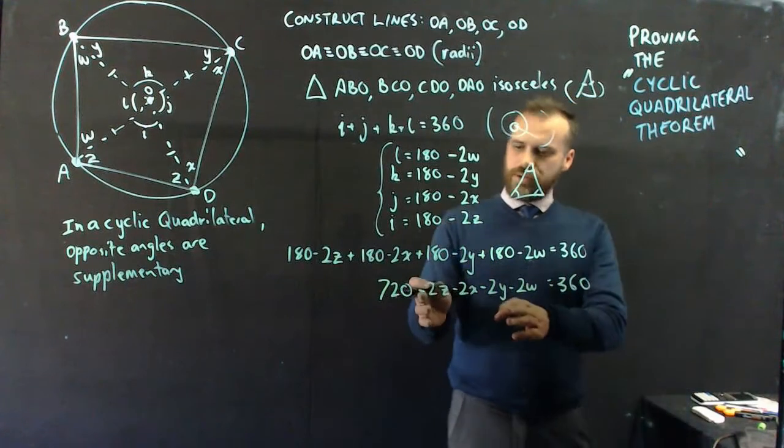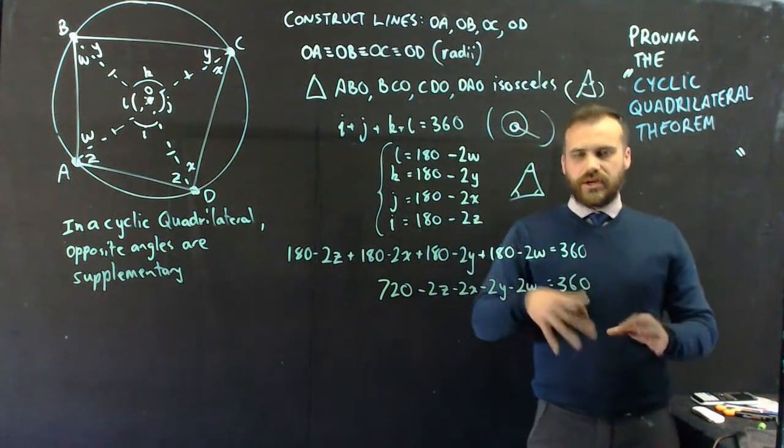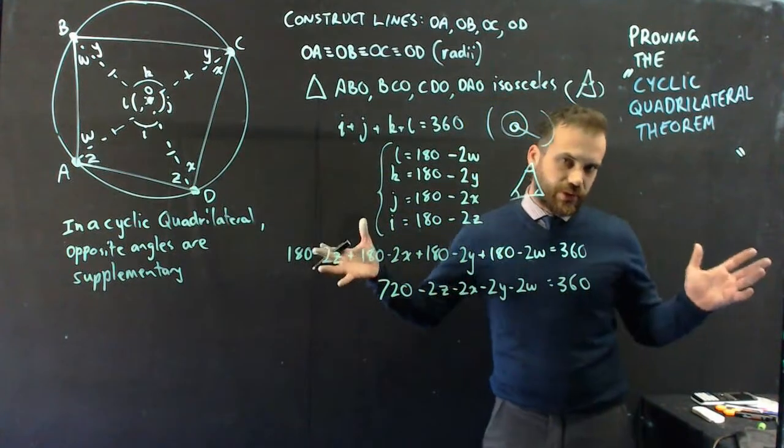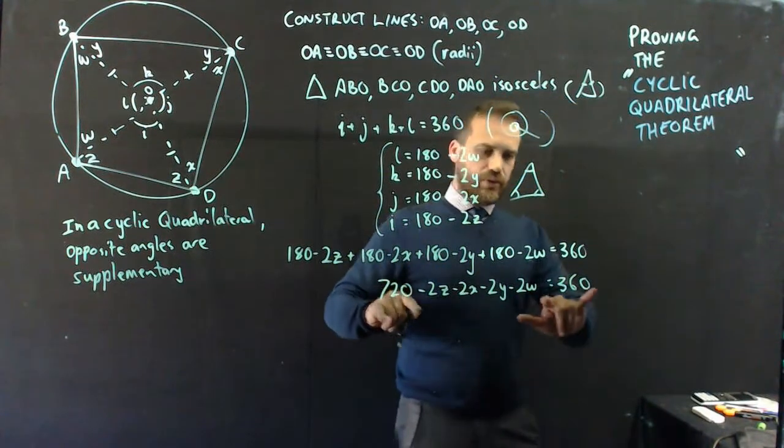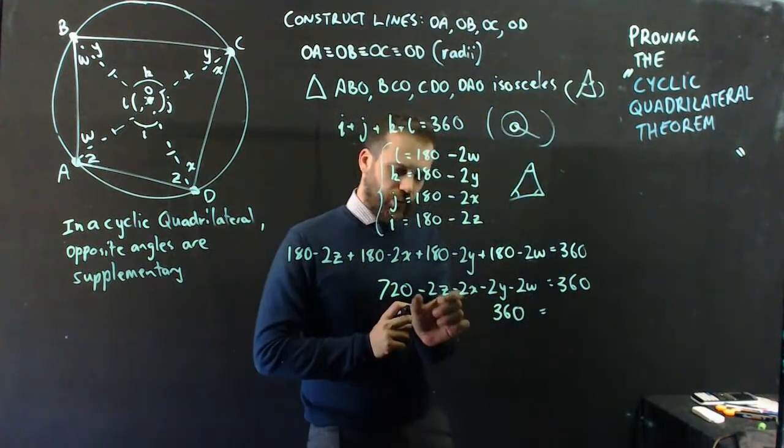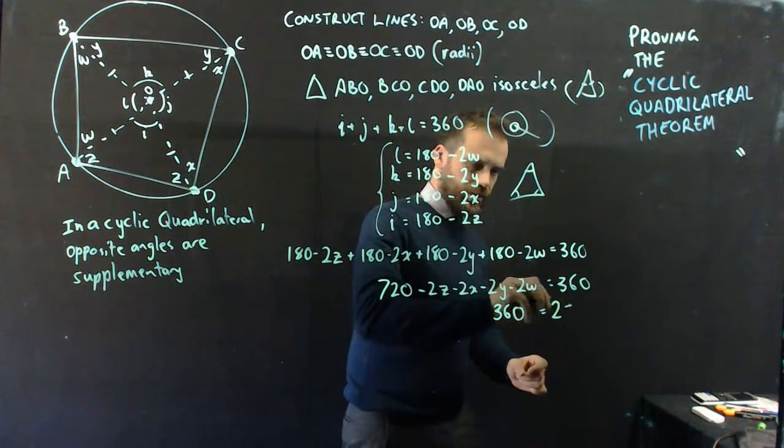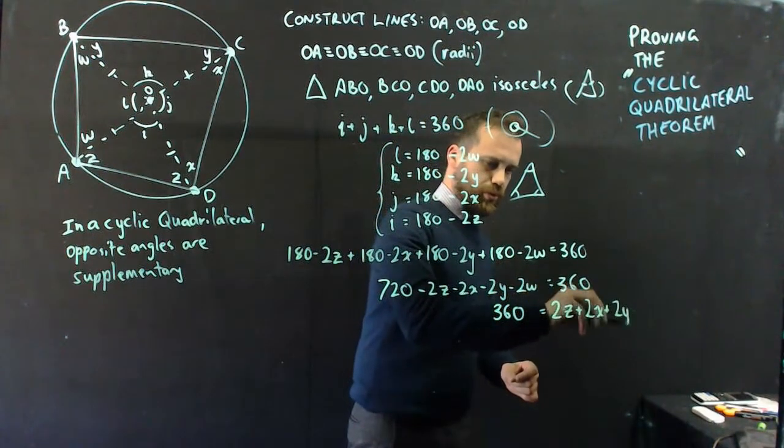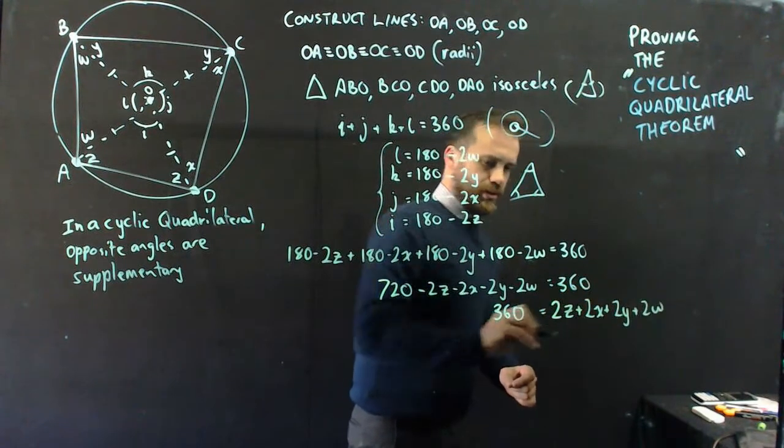Now, I could take all these negatives and move them to this side, and they'll be positive. I can take that 360 over to here and subtract it from both sides. And what I'm left with is 720 minus 360 is 360. And then all these negatives become positive on the other side. So 2Z plus 2X plus 2Y plus 2W.